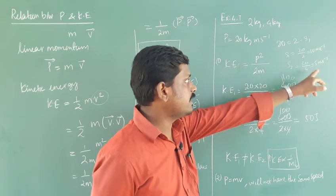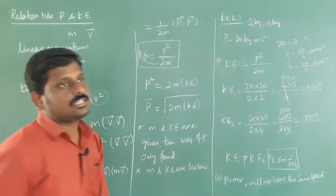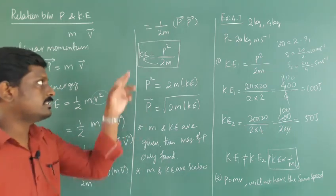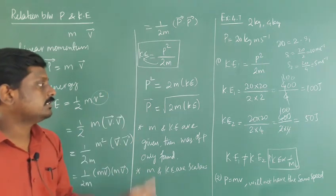So in this class we have discussed the relation between momentum and kinetic energy, that is kinetic energy is equal to P squared by 2m, and momentum P is equal to square root of 2m times kinetic energy.